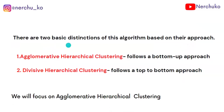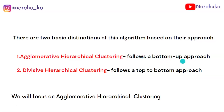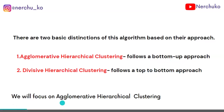There are two types of hierarchical clustering algorithms. The first one is agglomerative hierarchical clustering, and the second one is divisive hierarchical clustering. Agglomerative hierarchical clustering follows a bottom-up approach, while divisive hierarchical clustering follows a top-to-bottom approach.